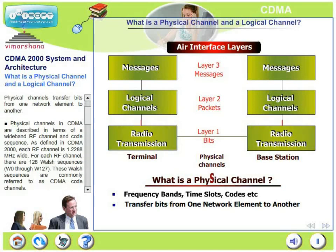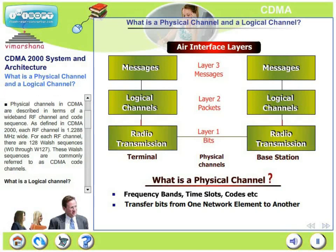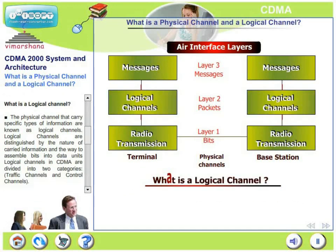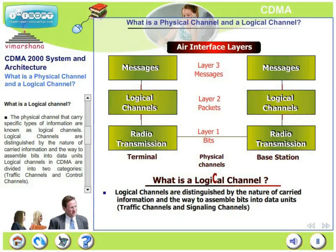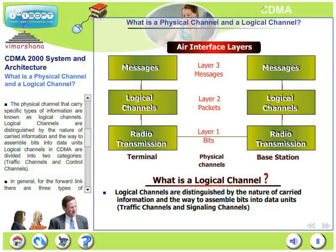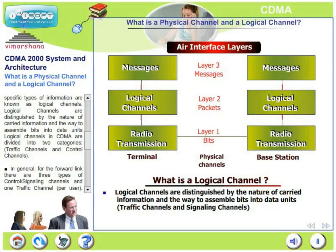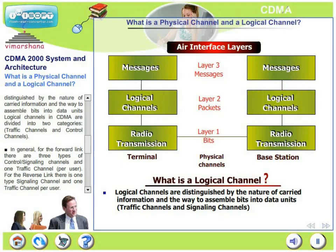Physical channels in CDMA are described in terms of a wideband RF channel and code sequence. As defined in CDMA 2000, each RF channel is 1.2 to 88 MHz wide. For each RF channel, there are 128 Walsh codes or Walsh sequences W0 to W127, commonly referred to as CDMA code channels. Logical channels are physical channels that carry specific types of information, distinguished by the nature of the carried information and the way bits are assembled into meaningful data units. Logical channels in CDMA are divided into two categories: traffic channels and control channels.